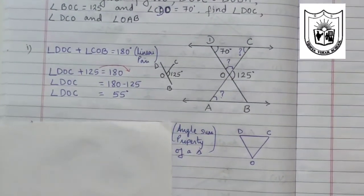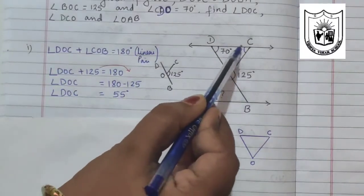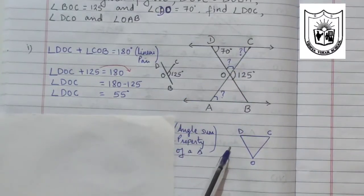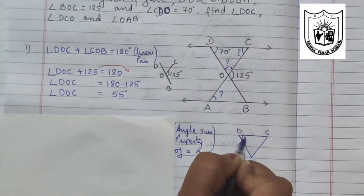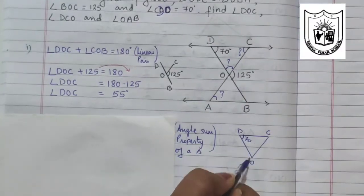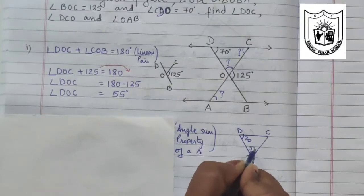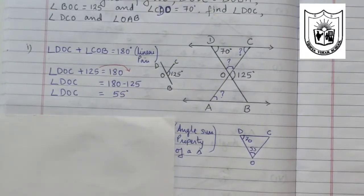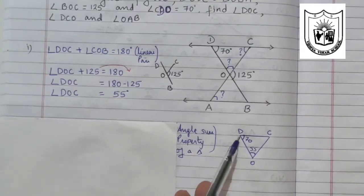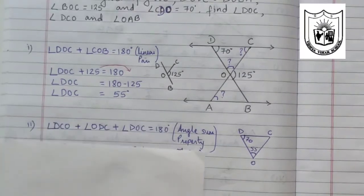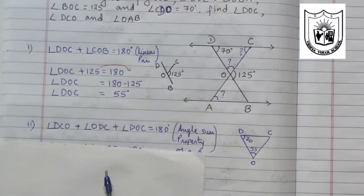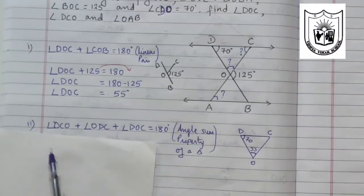Next we have to find DCO. We will take the top triangle. DOC is 55 degrees, which we found. Let me mark this as 55. Can you find the third angle? Yes, definitely we can by using angle sum property. Add all three angles and equate to 180 degrees. The reason is angle sum property of a triangle.